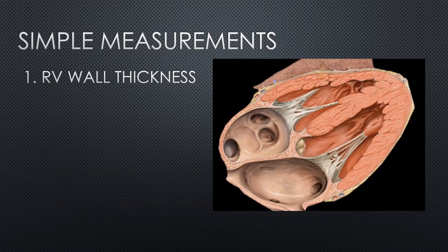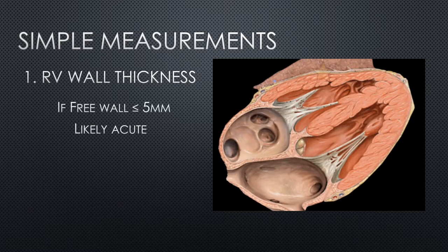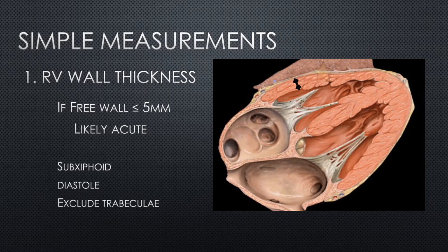Next, two simple measurements. The first is RV wall thickness. If the RV wall is thin, any RV dilation must be acute. However, if the RV wall is thick, it could be chronic disease, or they could have an acute PE on top of chronic disease. The cutoff we use is five millimeters — if the RV wall is five millimeters or less, this is normal and RV dilation is acute. Take the measurement in a sub-xiphoid view during diastole and exclude any trabeculae.